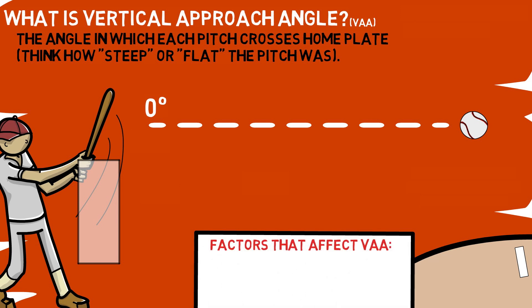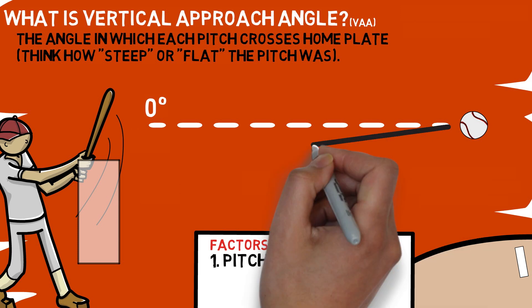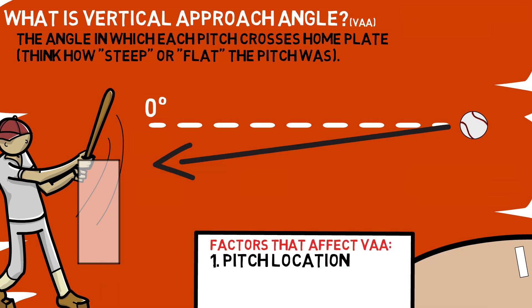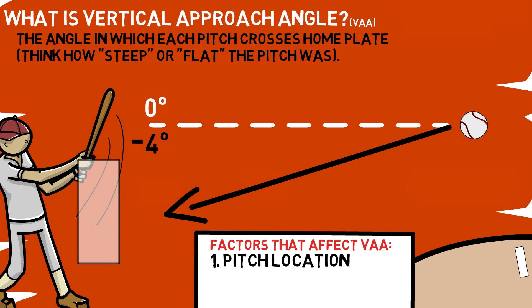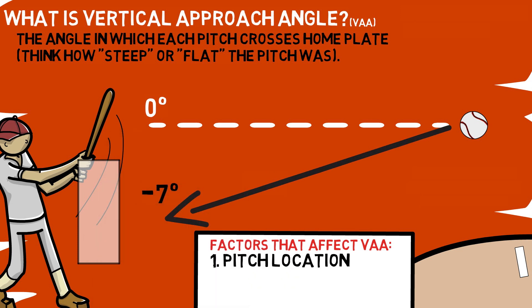Variations from the zero mark can be affected by several different variables. The first being pitch location. If you throw a fastball at the top of the zone, you can see that it will slightly differ from our original line — we'll say this pitch has a negative four degree vertical approach angle. However, that same pitch thrown towards the bottom of the zone would have a much steeper plane, around negative seven degrees. This number is always going to be negative because pitchers are throwing downwards towards the zone.